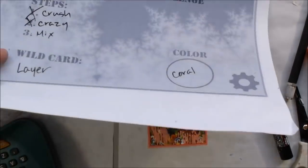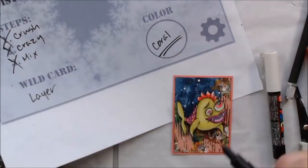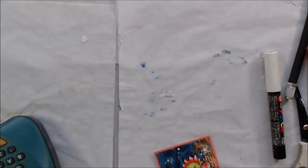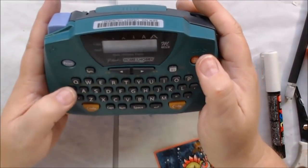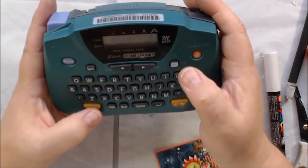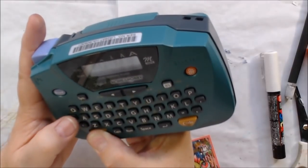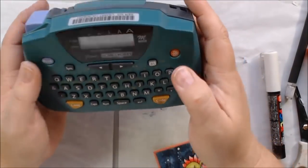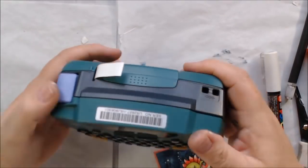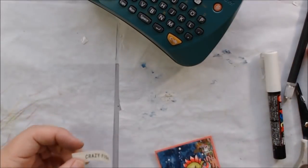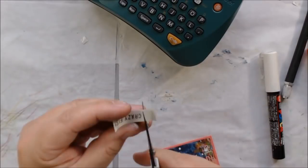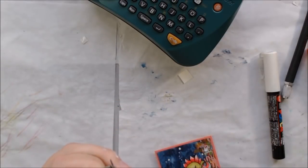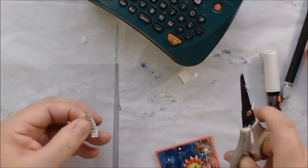And then I'm almost done. I decided to add the words "crazy fish," and I'm using my Brother P-touch label maker. It has five different sizes of fonts, and I picked the font, then I type it, print it out, and it comes out on a white tape. You can also get clear tape and blue tape and all kinds of stuff, but I just have the white, so that's going to be my final touch on my card.